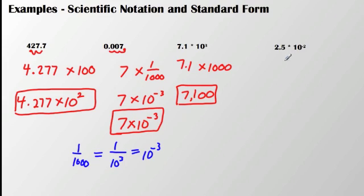And then I have 2.5 times 10 to the negative second. So I have 2.5 times 1 over 100. 10 to the negative second is the same thing as 1 over 10 to the second, which is going to simplify to 1 over 100.